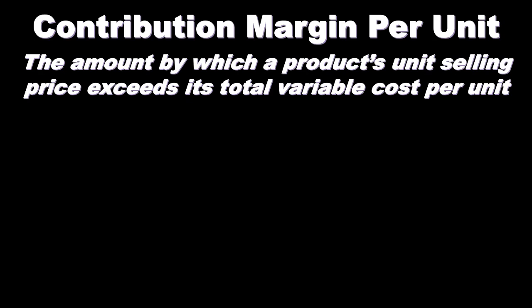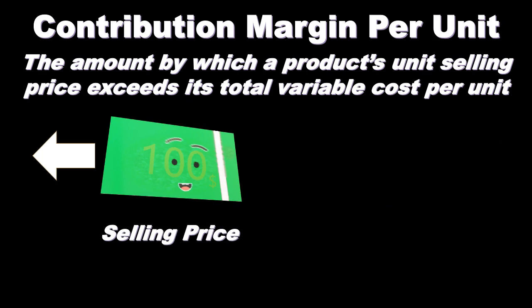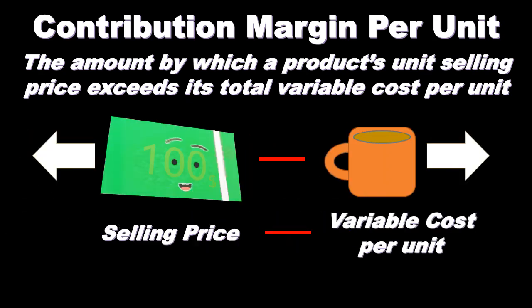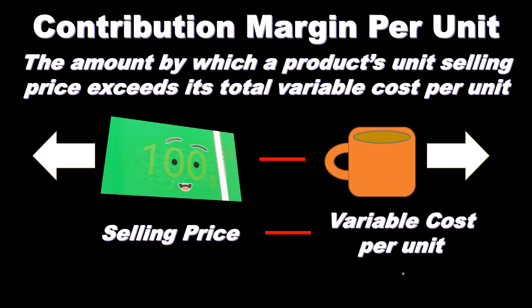The contribution margin per unit is the amount by which a product's unit selling price exceeds its total variable cost per unit. On a per unit basis, we're considering the selling price — what's coming in — compared to the variable cost per unit, what's going out. For example, with a coffee mug, we look at the selling price for that one piece of inventory, then the variable costs — not the fixed costs. We're only using variable costs, not the cost of goods sold.